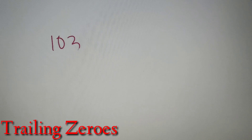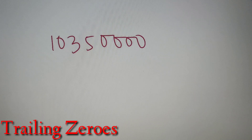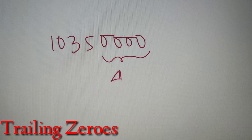Trailing zeros are the zeros at the end of a number. For example, if we have a number in base 10 such as 1035 followed by four zeros, the zeros at the end are called the trailing zeros. In this particular number, there are four trailing zeros, so the number of trailing zeros is equal to 4.